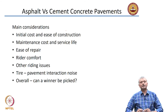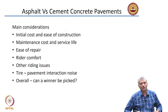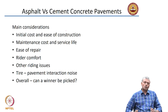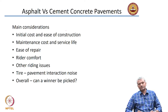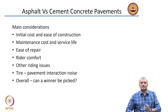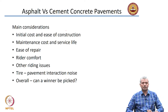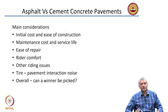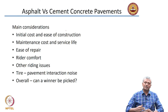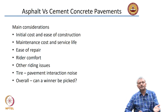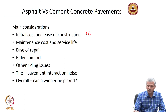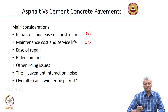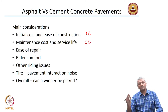To give a bird's eye view of why one should consider one pavement over the other: the main considerations are initial cost and ease of construction. Both of these point towards a benefit for flexible pavement made with asphalt concrete. Cost is low and it is very easy to construct, as opposed to cement concrete pavement. However, for maintenance cost and service life — how long the pavement will serve satisfactorily — the concrete pavement is the winner. Because if you have done a good job of construction, the maintenance cost of a cement concrete pavement is not much at all.